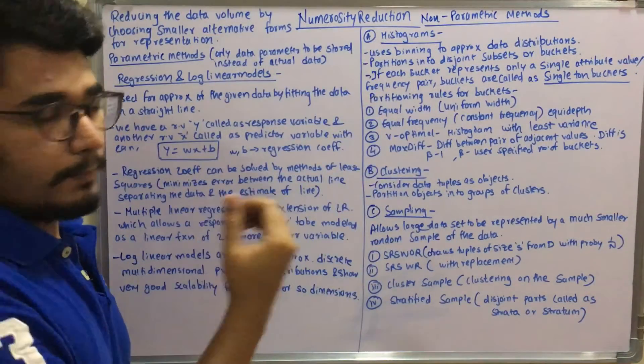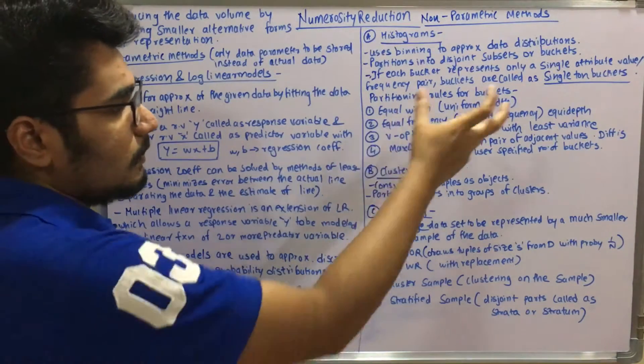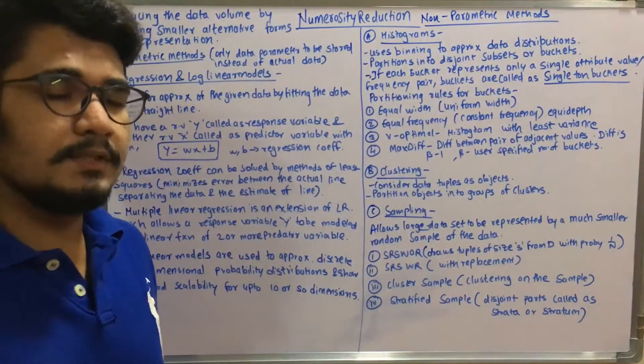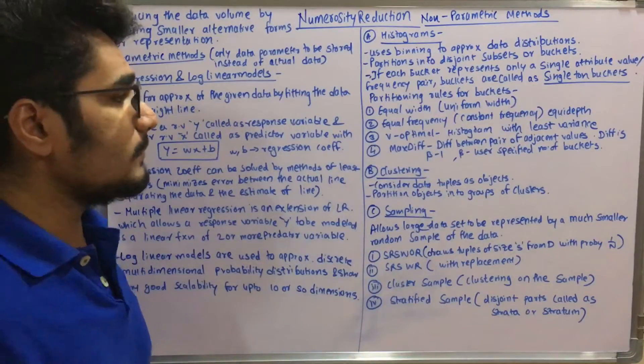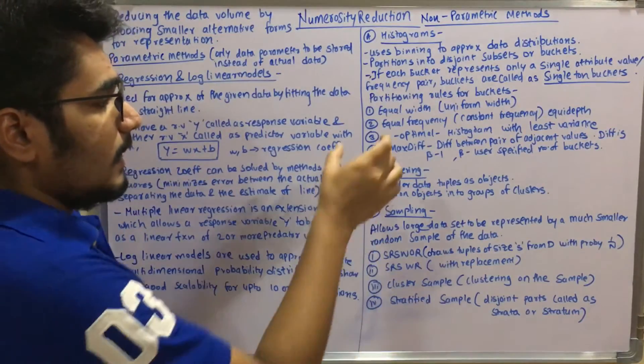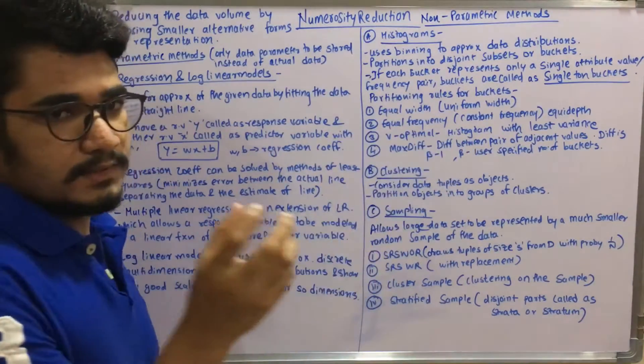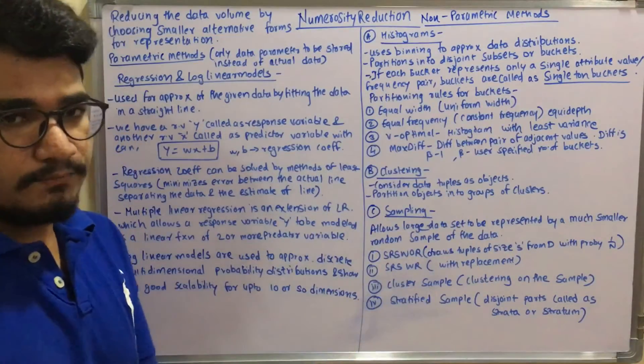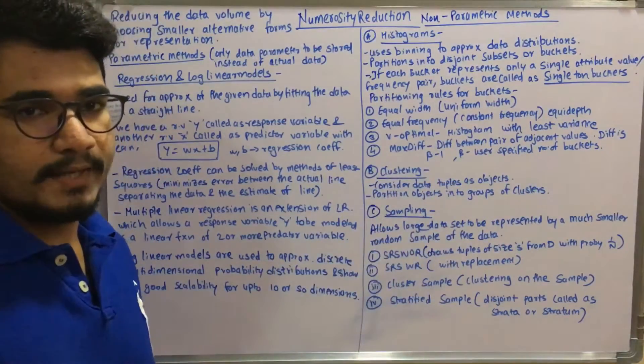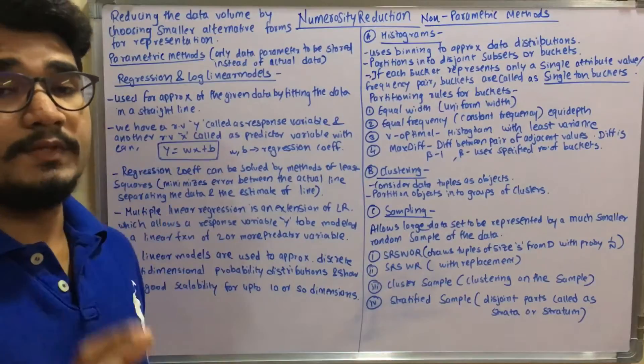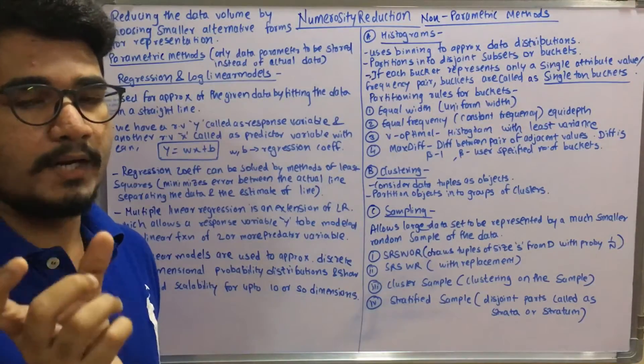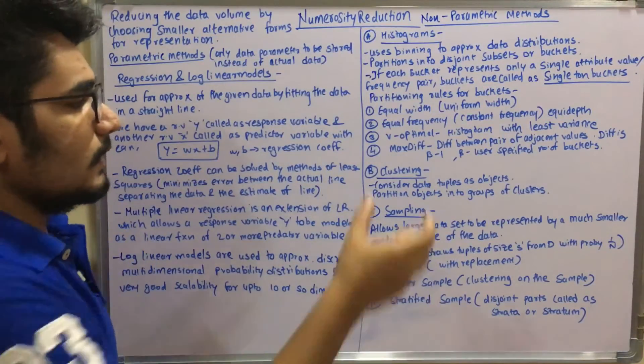It uses bins to approximate the data distributions. So it partitions into disjoint subsets or buckets. If each bucket represents only one single attribute or one single frequency value pair, then those buckets are called singleton buckets since you have only one particular value in that. And so there are n number of partitioning rules which are applied to histograms. You have four different rules for partitioning. You have equal width, which is of uniform width, also called equi-width partitioning. You have equal frequency, which maintains a constant frequency throughout that histogram, which is called equi-depth. You have V-optimal, which is a histogram with least variance in it. And then you have max difference.